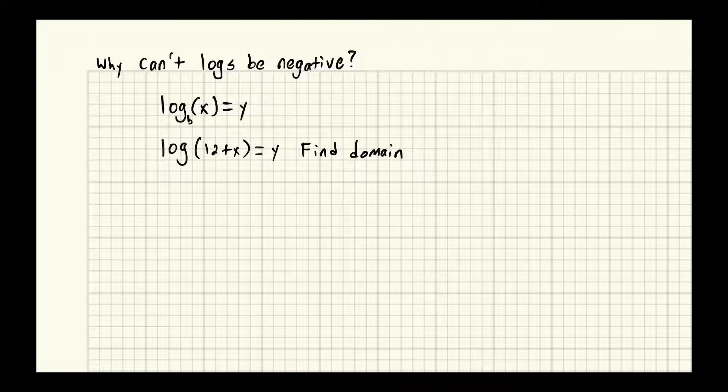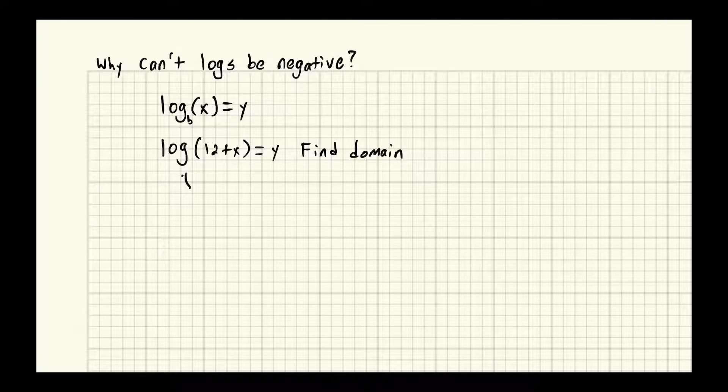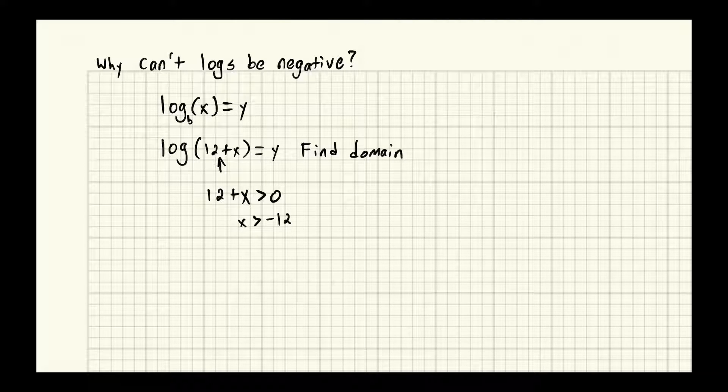Well if you know the rule, you just know that the input to the log cannot be negative. No negatives. That's the same thing as saying this thing in here, 12 plus x, at the end of the day whatever number this puts out that the log is going to see has to be bigger than zero. And then we can solve and see that x has to be strictly bigger than negative 12 for this to work.